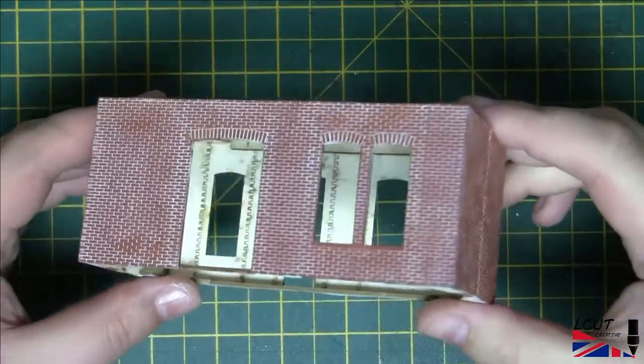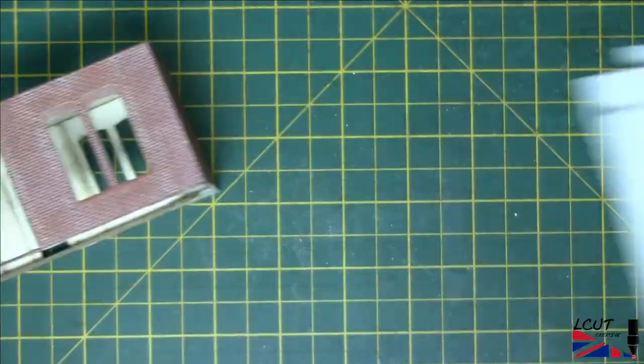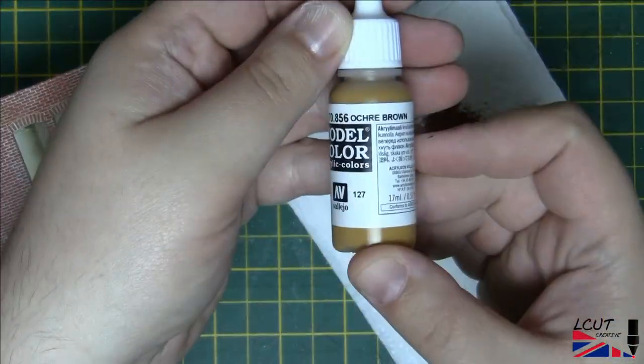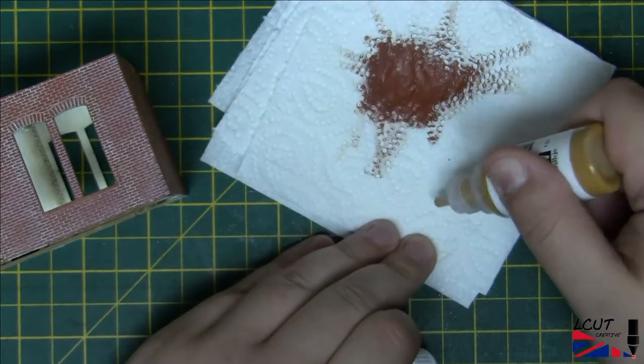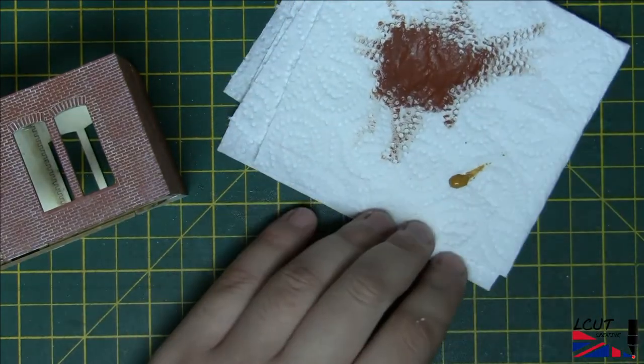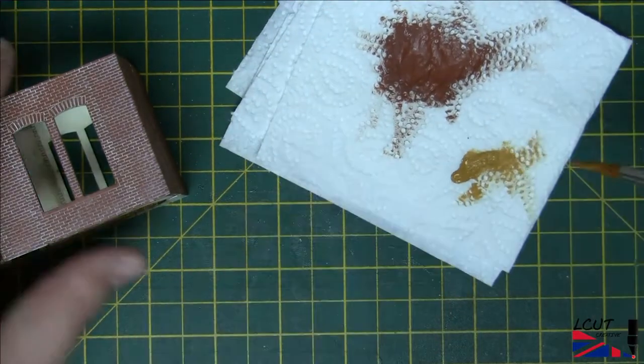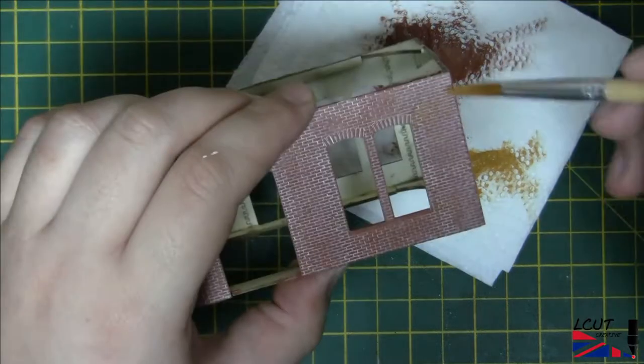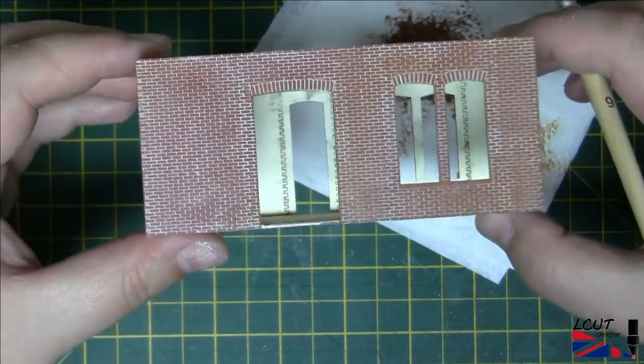In this case the model is being drybrushed with the same paint as the base color. Then Vallejo model color ochre brown is used to give a more warm look to the brick. It is important to seal the model with matte varnish to cover any of the gloss varnish used previously and to unify the surface finish.